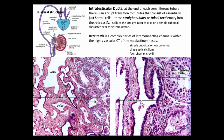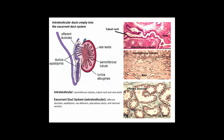The rete testis is a complex series of interconnecting channels within the highly vascularized connective tissue of the mediastinum testis. Its cells are simple cuboidal to low columnar, with a single apical cilium and few short microvilli. The diagram shows in purple the excurrent duct systems, which are bilateral structures. The intratesticular ducts — seminiferous tubules, tubuli recti, and rete testis — all lie within the testis itself.